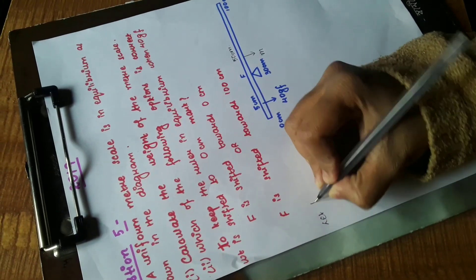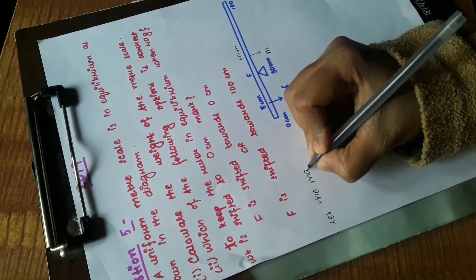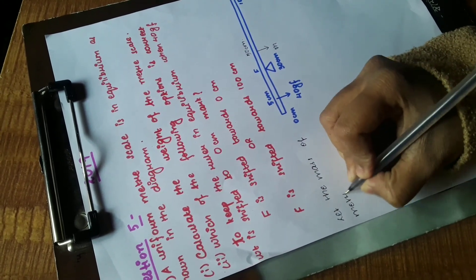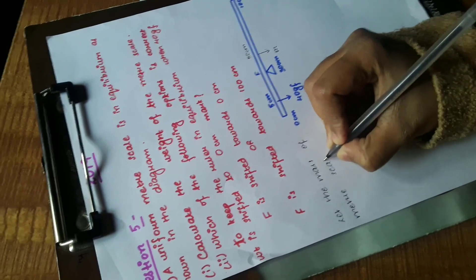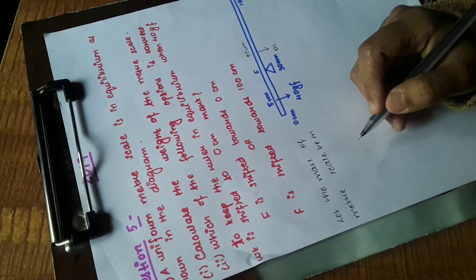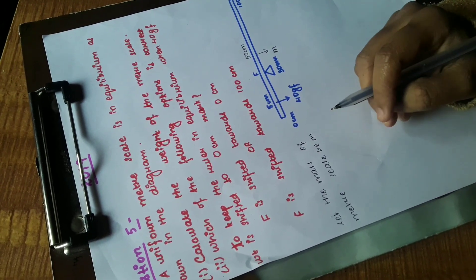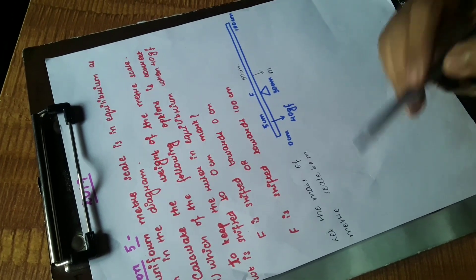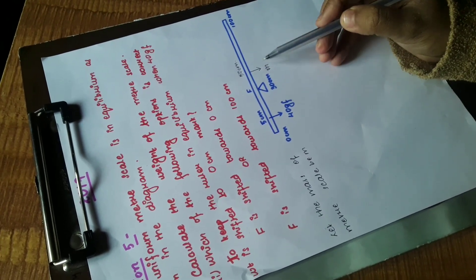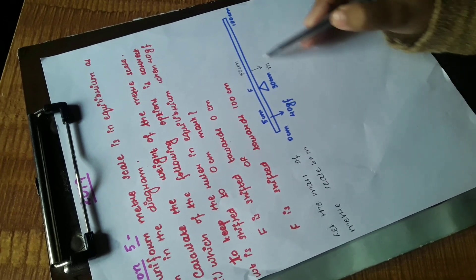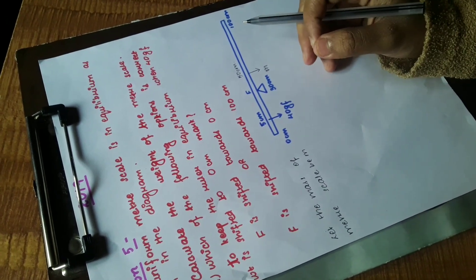We are taking the mass of the meter scale as M, at the 50 centimeter mark. Now the most important thing about these questions is that whenever you have two different weights—one is the weight provided in the question and the other is the weight of the meter scale.